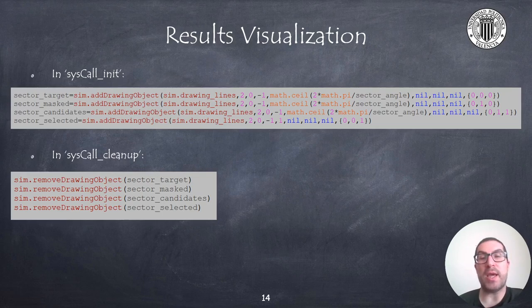So, to draw these lines, we use the addDrawingObject function of CoppelaSim API.